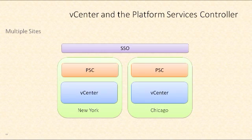In another scenario, multiple PSCs are deployed at different locations — for example, New York and Chicago. Under normal circumstances, the New York vCenter uses the New York PSC, and the Chicago vCenter uses the Chicago PSC. However, the topology allows for enhanced linked mode, where single sign-on is shared and PSC functions are replicated across multiple locations. While this doesn't provide redundancy, licensing, permissions, tags, and roles can all be replicated across both sites.